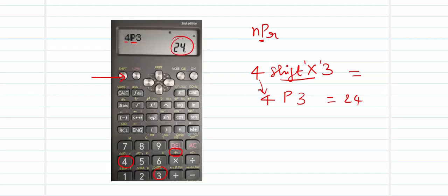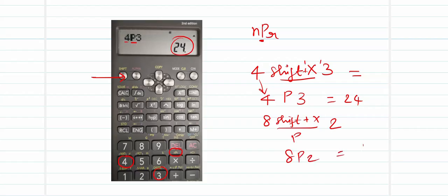Whatever number you need, key it in, press the Shift button, then press the multiplication button — Shift plus multiplication gives you P — then enter the remaining element. For example, for 8P2, press 8, Shift, multiplication, 2, then press equal-to to get the answer.